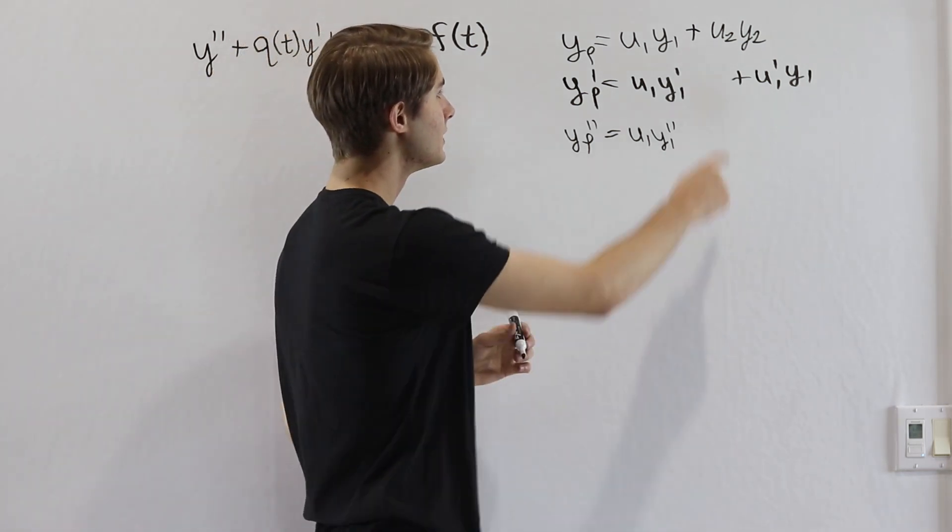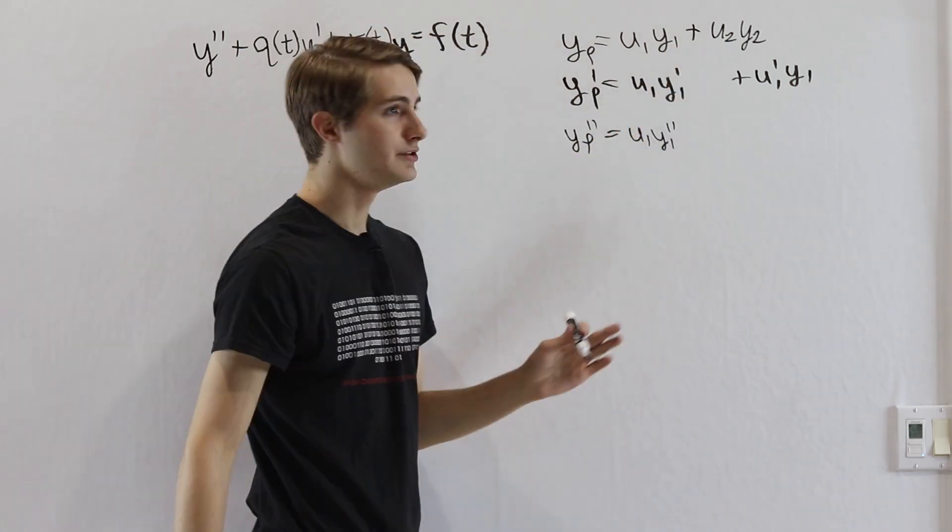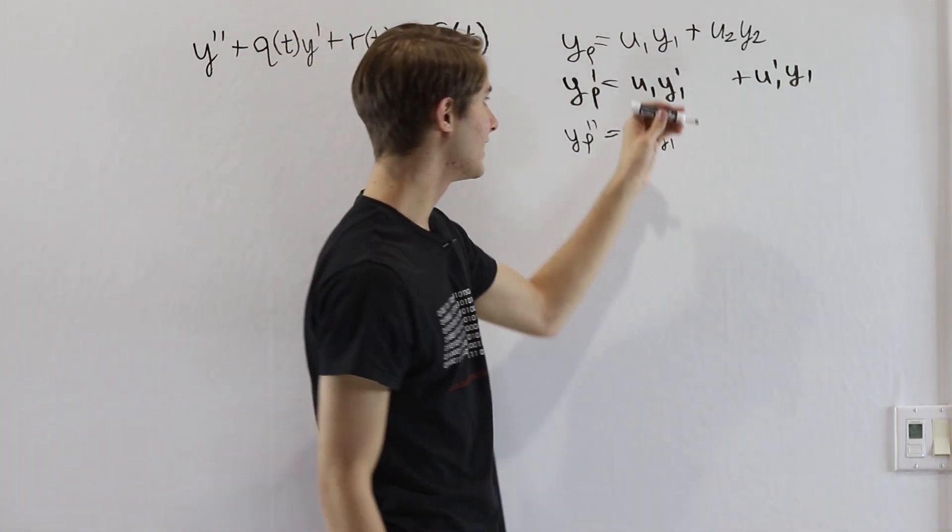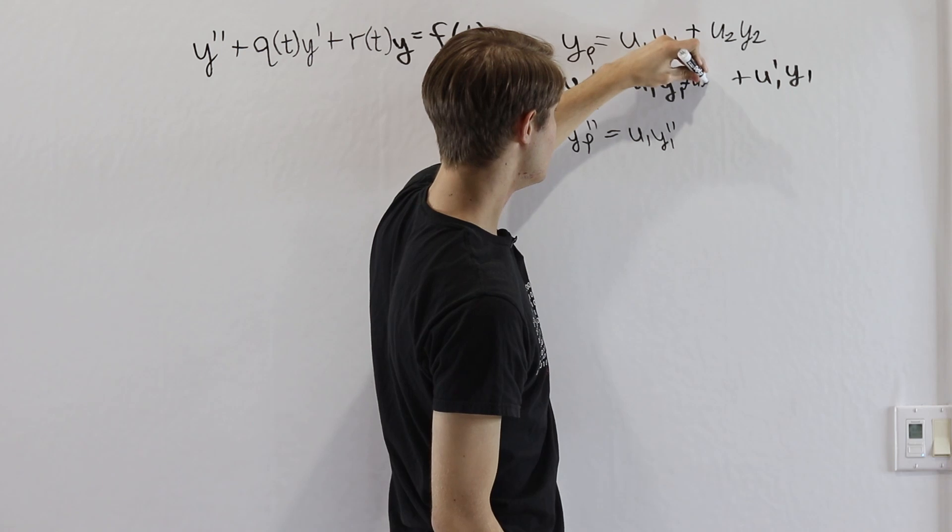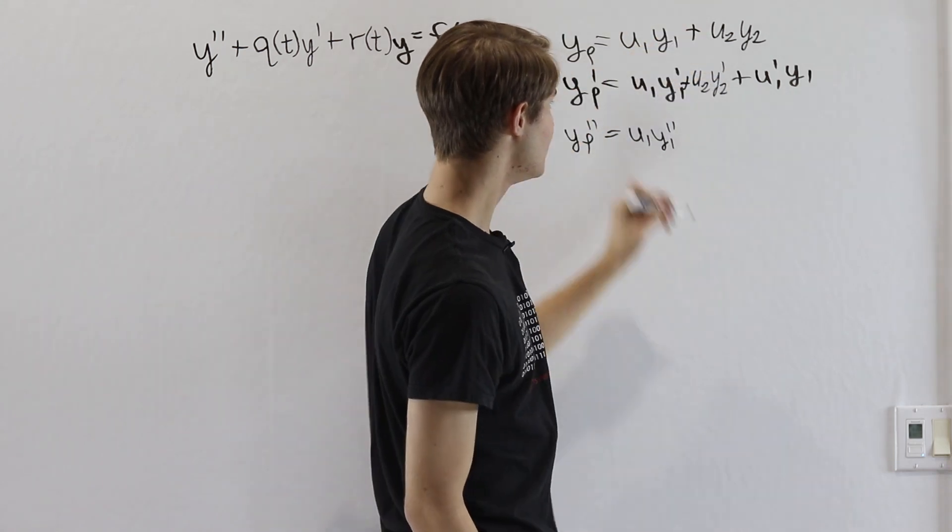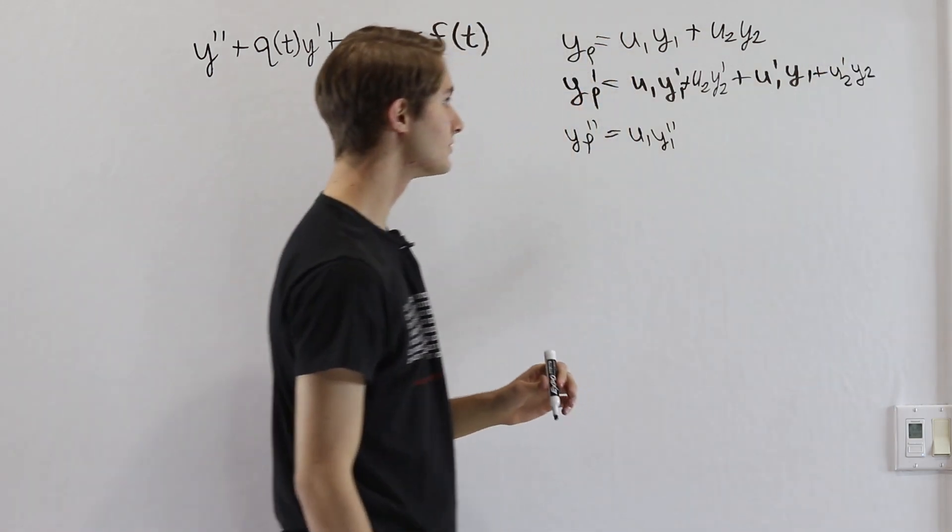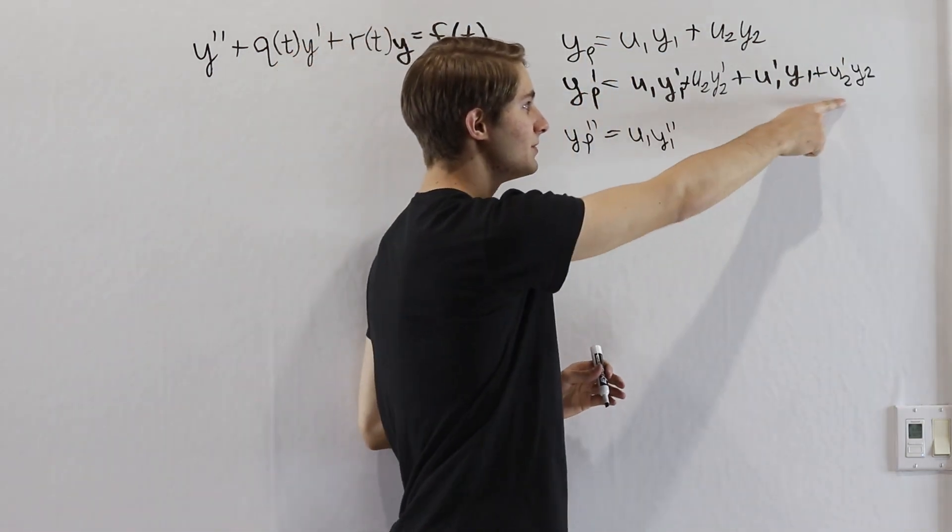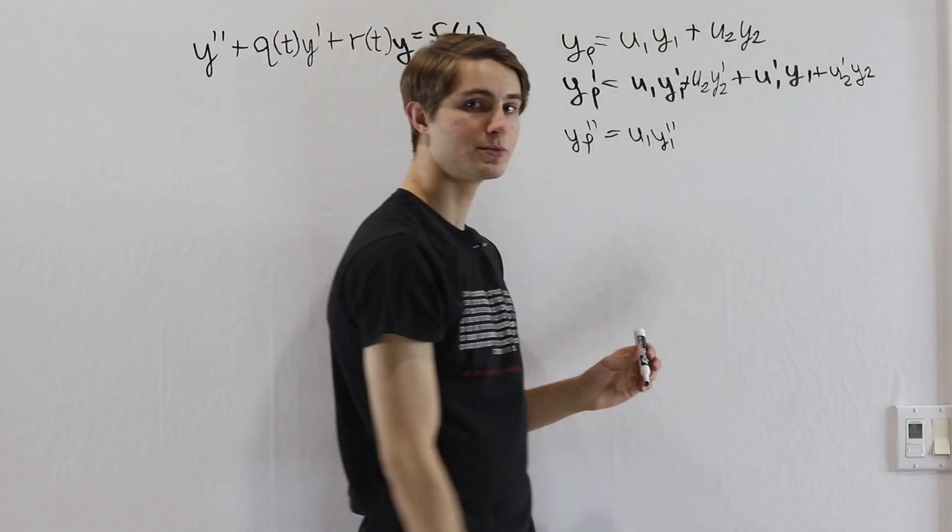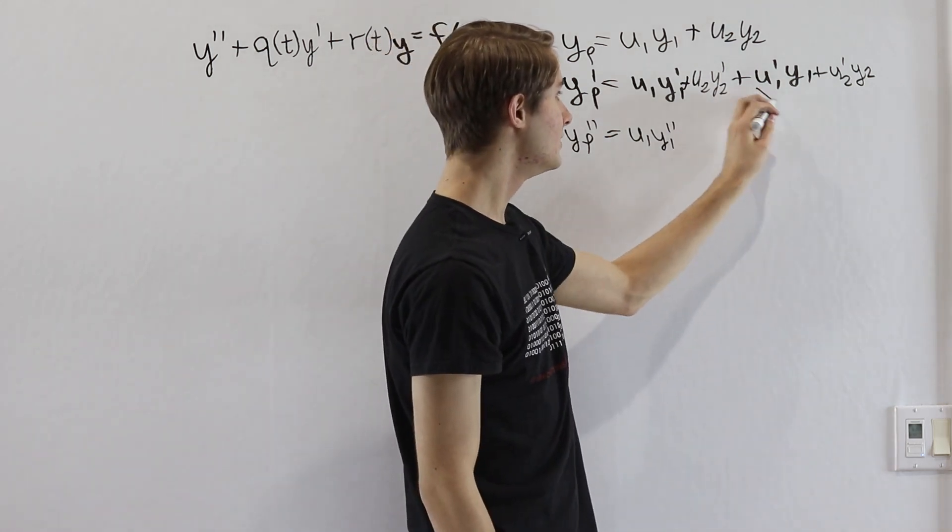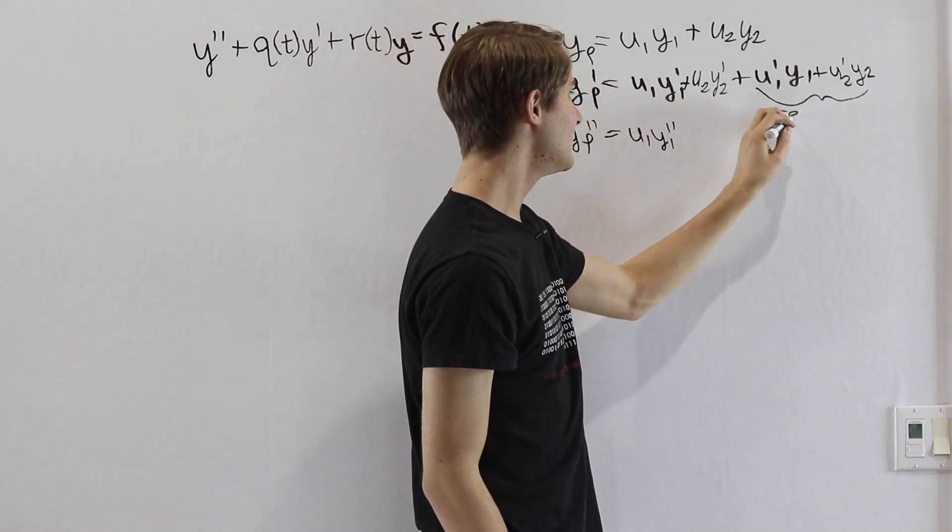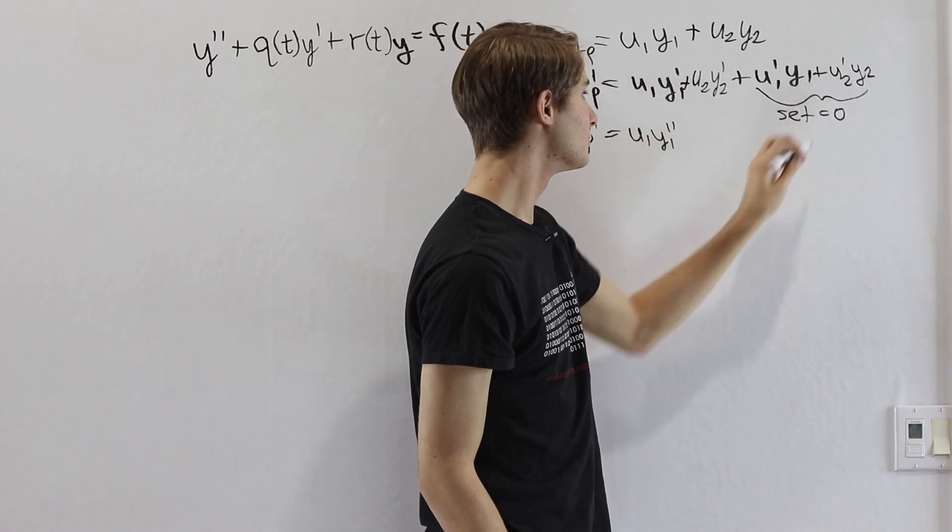In this case, when we differentiate u2y2, it's going to be the same process as what we had here. So we'll have a u2y2 prime here, and then over here a u2 prime y2. But what's important is, remember we said we don't like this u1 prime, u2 prime stuff. So what we're going to do is just set this part equal to 0.